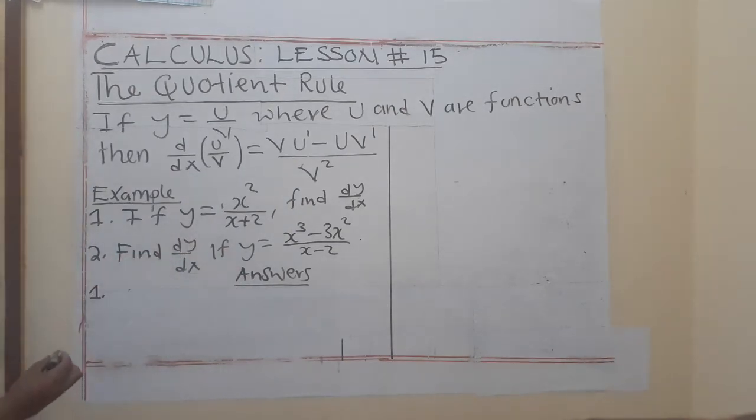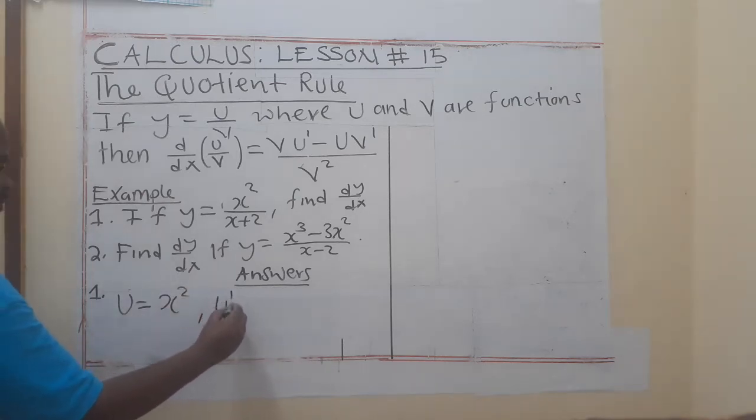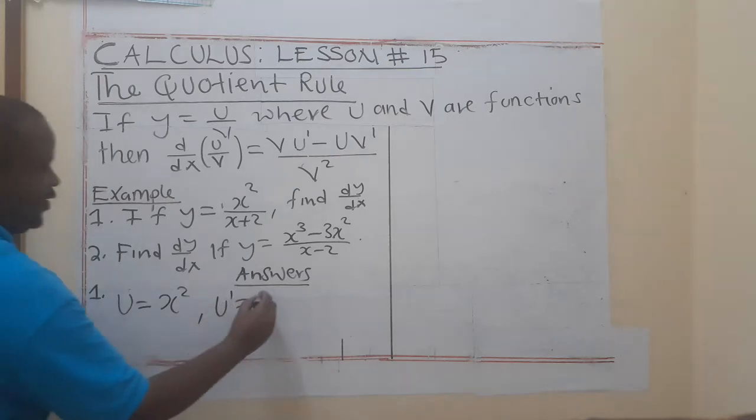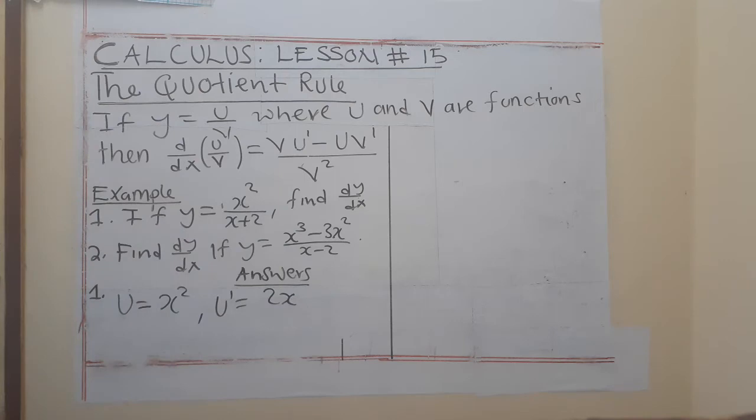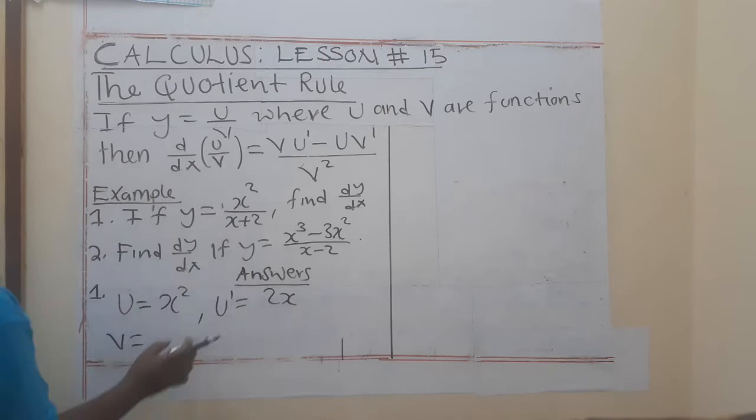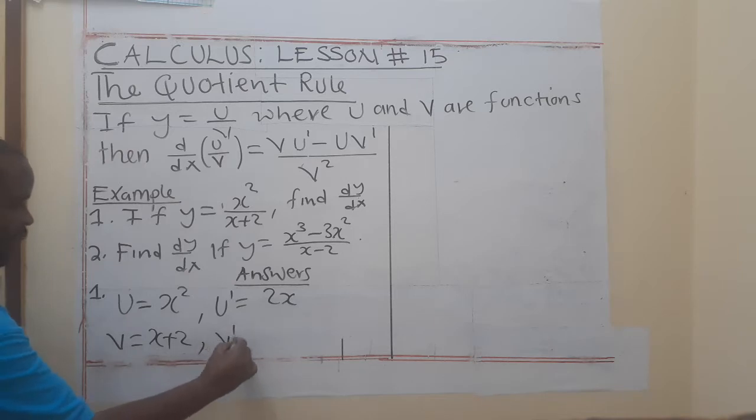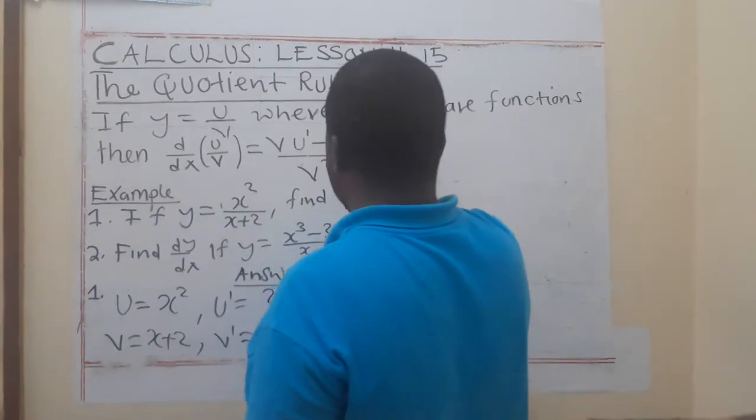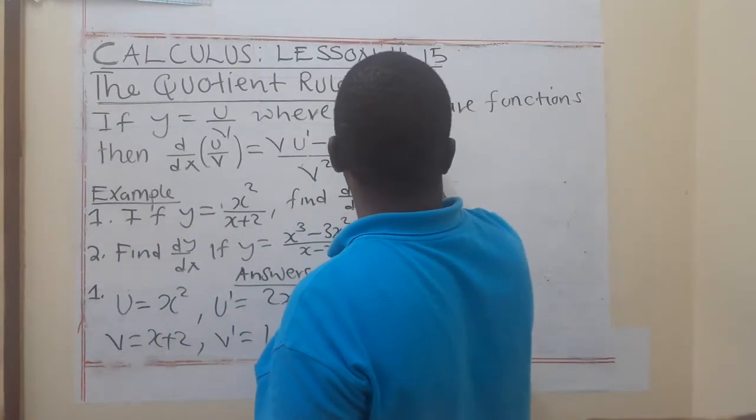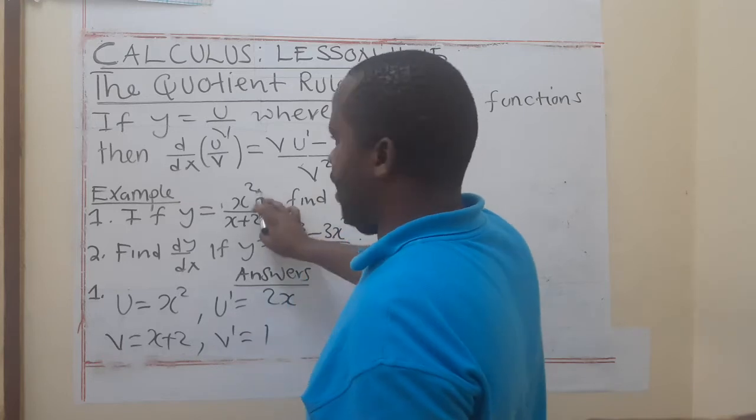For this example, we are going to say u is equal to x to the power of 2, so that u' is equal to 2x. Then you say my v is equal to x + 2, so that v' is equal to 1.